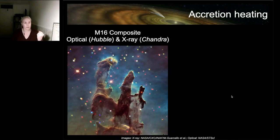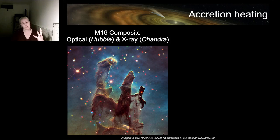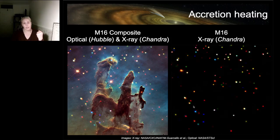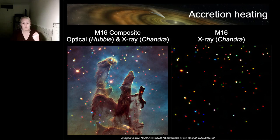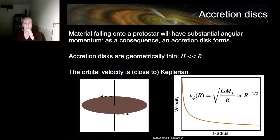The Pillars of Creation in the Eagle Nebula illustrates this: coloured point sources are young stars still actively accreting material, identifiable through their X-ray brightness, even though we cannot resolve their disks. These disks are also called accretion disks because they redistribute angular momentum and feed material onto the star. They are geometrically thin — their height is significantly less than their radius — and their orbital velocity is close to Keplerian, arising from the balance between inward gravity and outward centrifugal force.